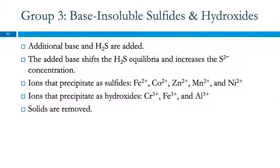Then you add base, and you can increase the sulfide ion concentration. And so then you'll get these others that precipitate out. These are the more soluble ones, but because the sulfide ion concentration is higher, they'll precipitate. And then chromium, iron, and aluminum will precipitate as hydroxides.